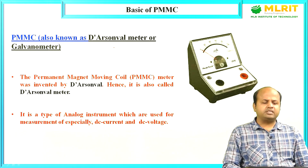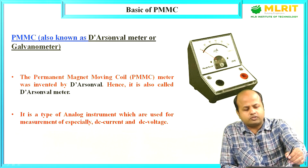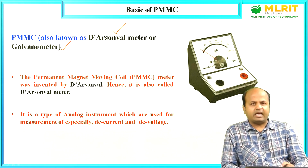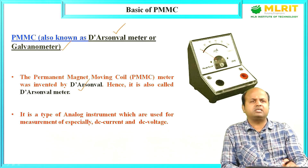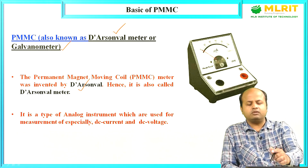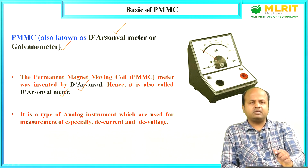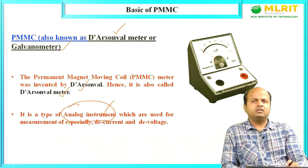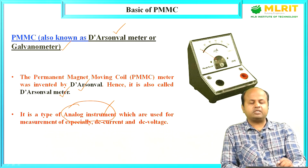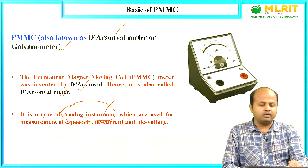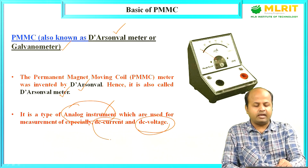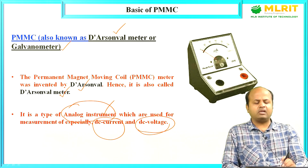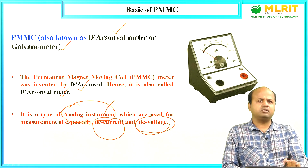Now I will discuss the basics of PMMC. PMMC is also known as D'Arsonval Meter or Galvanometer. This PMMC was invented by the scientist D'Arsonval, which is why it is also called D'Arsonval Meter. It is a type of analog instrument used for the measurement of DC voltages and DC current. We must always remember that PMMC basically measures DC current and DC voltages only.